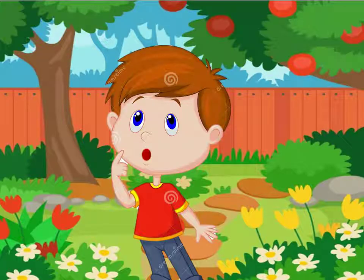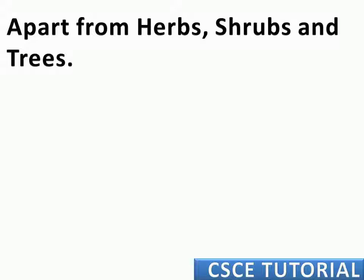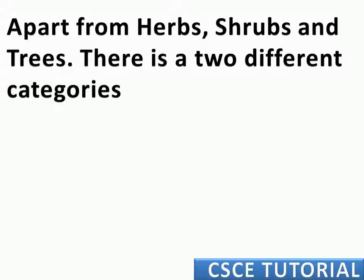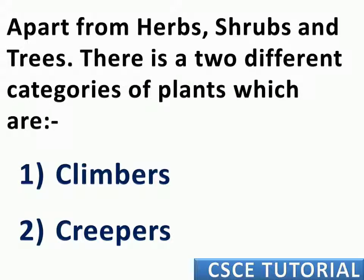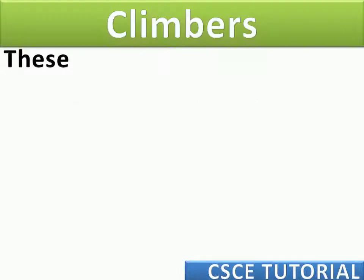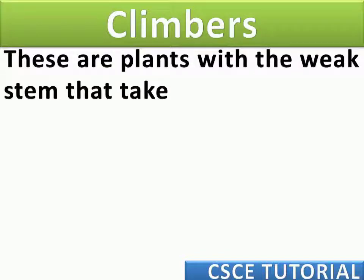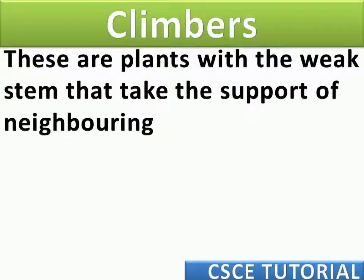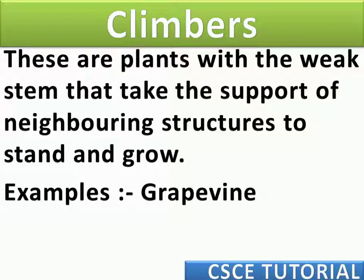Apart from herbs, shrubs, and trees, there are two different categories of plants: climbers and creepers. Climbers are plants with a weak stem that take the support of neighboring structures to stand and grow.